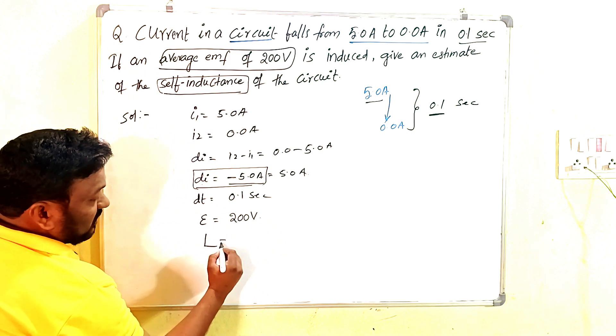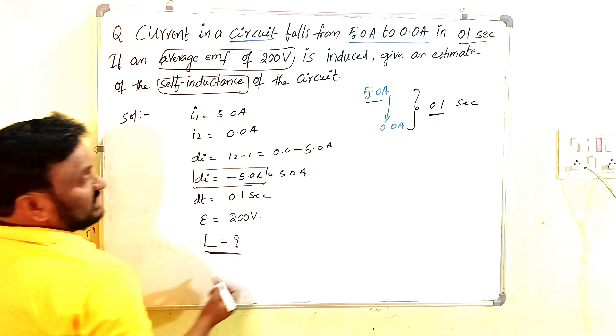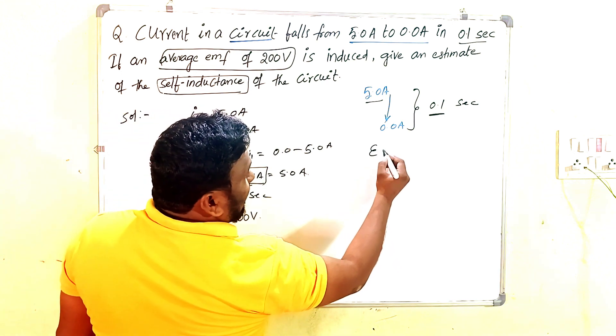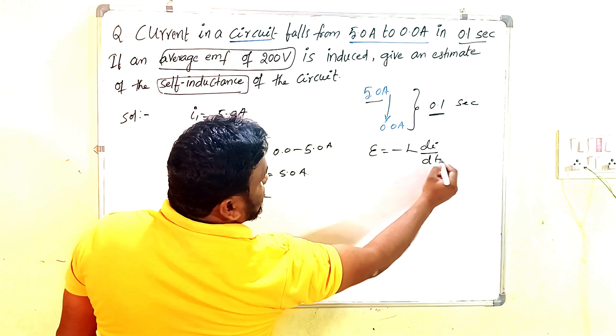Now we have to find out the self-inductance of this circuit. That is the given data. The formula we're going to use is ε = -L(di/dt).